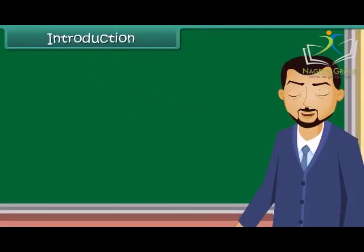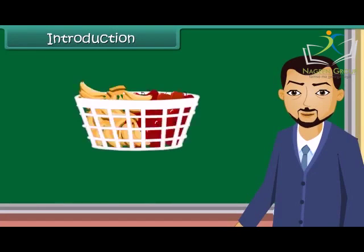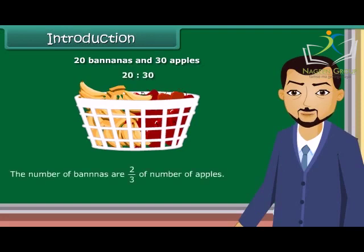Ratio means comparing two quantities. A basket has two types of fruits: 20 bananas and 30 apples. The ratio of the number of bananas to the number of apples is 20 is to 30. The number of bananas is 2 upon 3 of the number of apples. In terms of ratio, this is written and read as 2 is to 3.